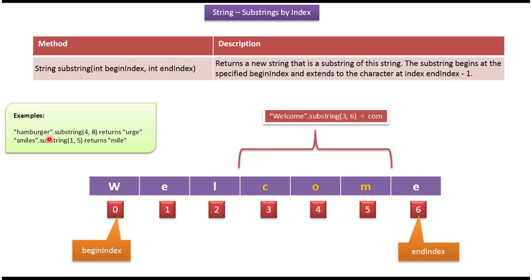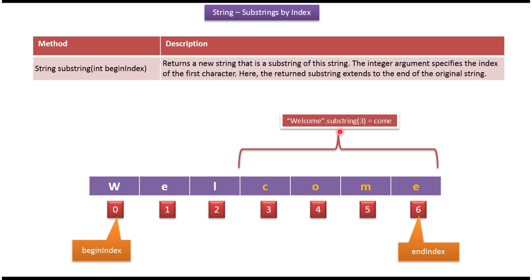Here you can see some more examples of the substring method. 'Hamburger'.substring(4, 8) returns 'urge'. 'Smiles'.substring(1, 5) returns 'mile'. 'Welcome'.substring — here I am passing only the begin index, which is 3, so 3 is this position, and it will return 'come'.